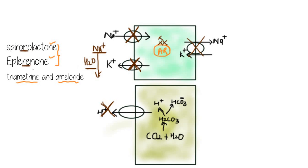Triamterene and amiloride block only the sodium channel — the epithelial sodium channel. As a result, the same thing happens: sodium cannot be reabsorbed into the circulation, resulting in loss of sodium into the urine along with water, which is diuresis. Again, there will be no secretion of potassium and no secretion of H+ ions.